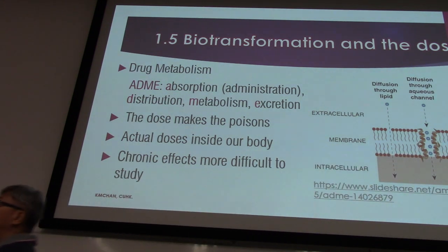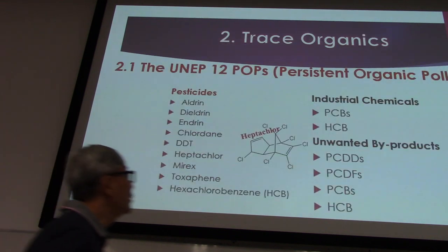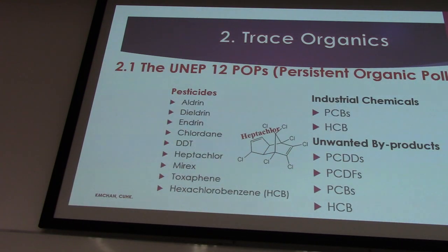For example, metals — divalent ions — they could slip in through divalent ion carriers like a copper transporter or calcium transporter. There must be some way that they could get in. With this concept in mind, the first group of chemicals I would like to explain is trace organics. They are still around — we tried very hard to get rid of them, but you can see the benefits of using them. We'll talk about pesticides later.